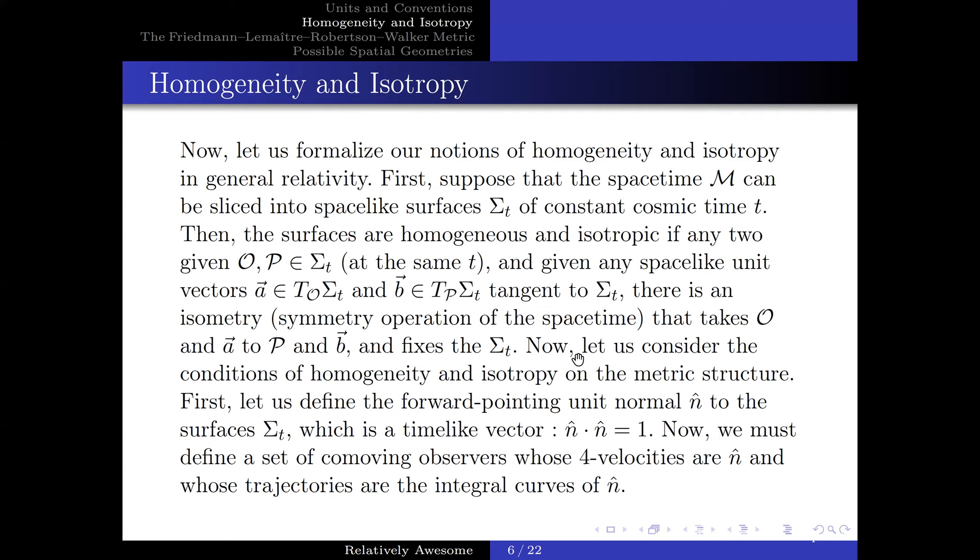and any given spacelike unit vectors A and B tangent to Σ_t, there is an isometry that takes O and A to P and B and fixes the Σ_t. Now, let us consider the condition of homogeneity and isotropy on the metric structure. First, let us define a forward-pointing unit vector to the surface, Σ_t. This unit vector has the property when dotted with itself produces one. Now, we must define a set of comoving observers whose velocities are n̂ and has trajectories which are integral curves of n̂.